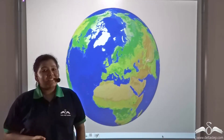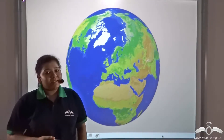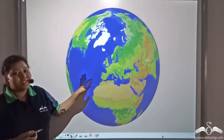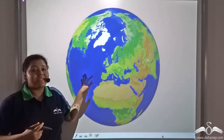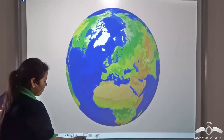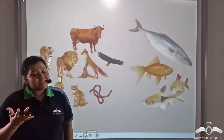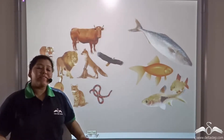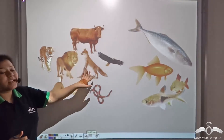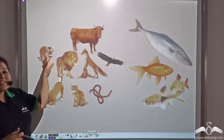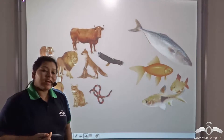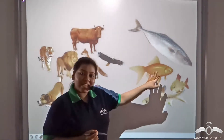70% of the earth consists of water bodies, seas and oceans, and the remaining 30% is covered by land. There are different living organisms that live in these two habitats. There are land-living organisms like tigers, lions, dogs and cats, and there are water-living organisms like fishes.